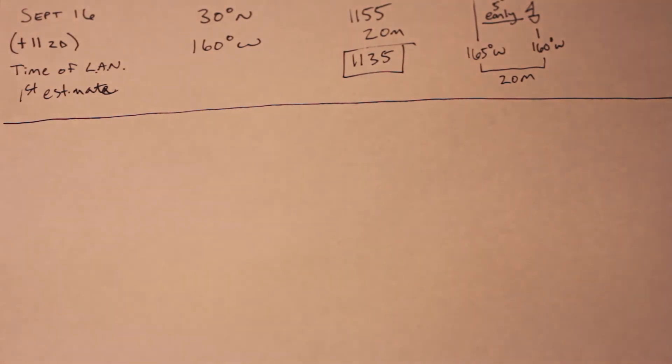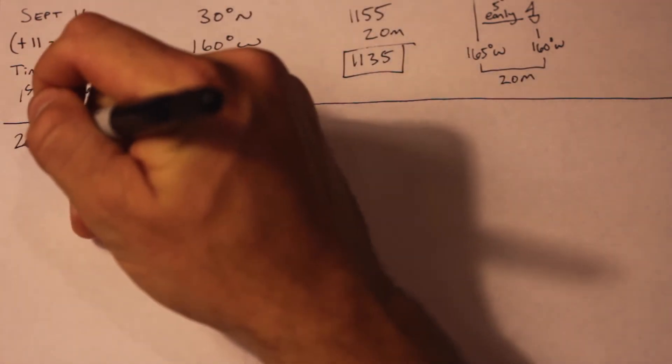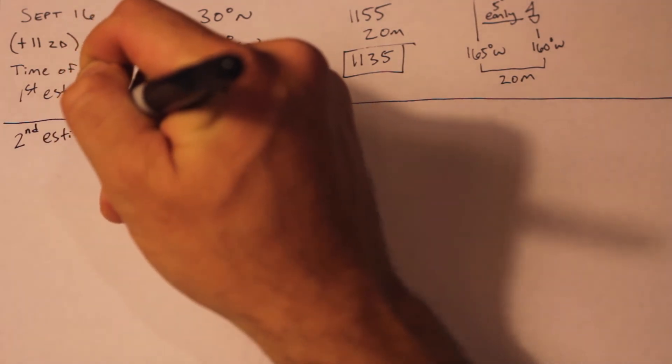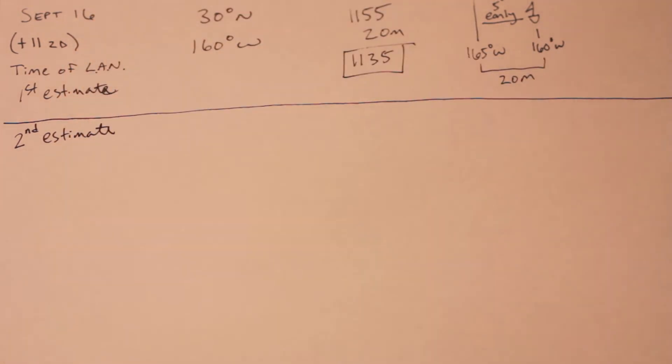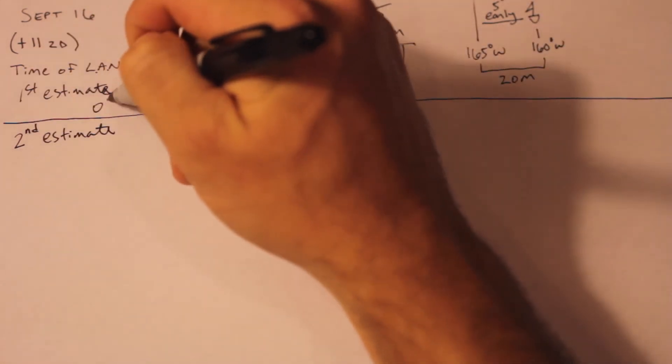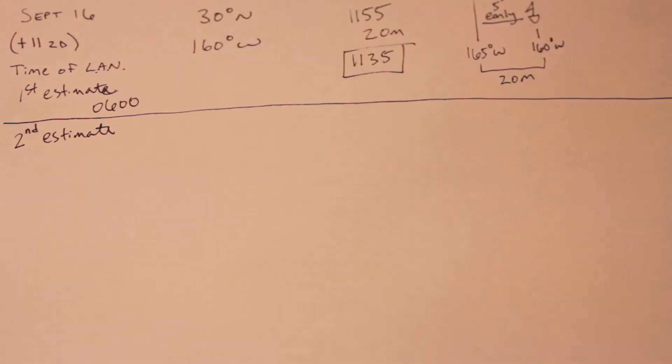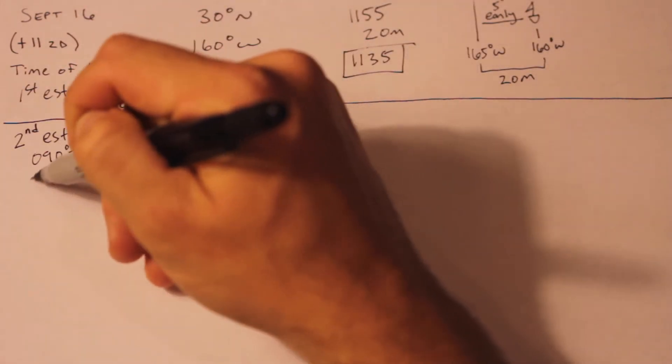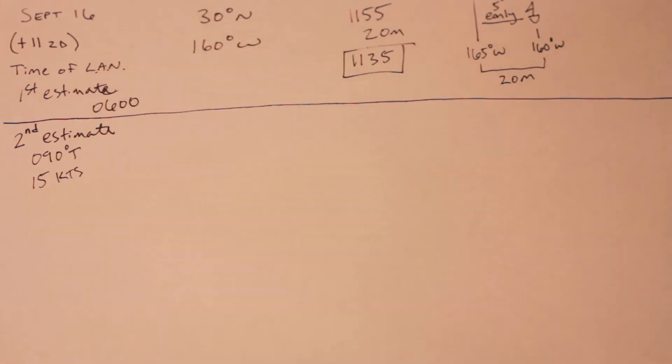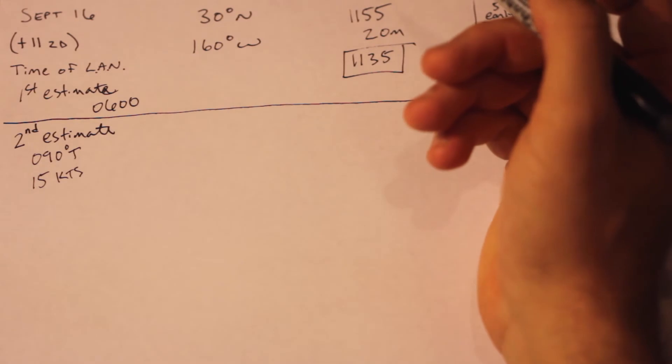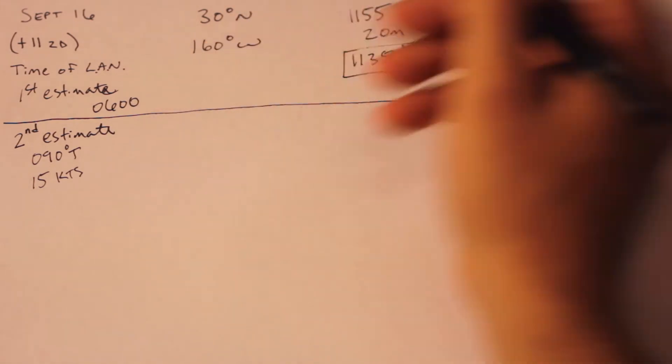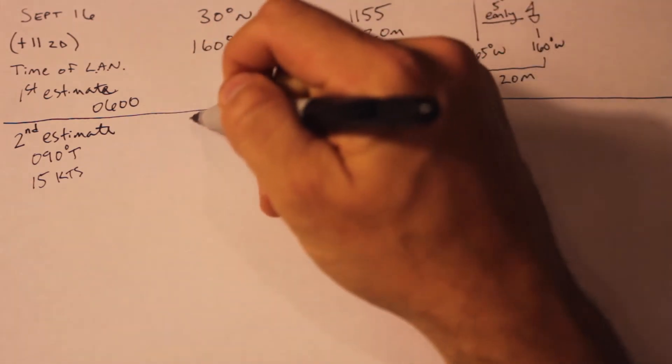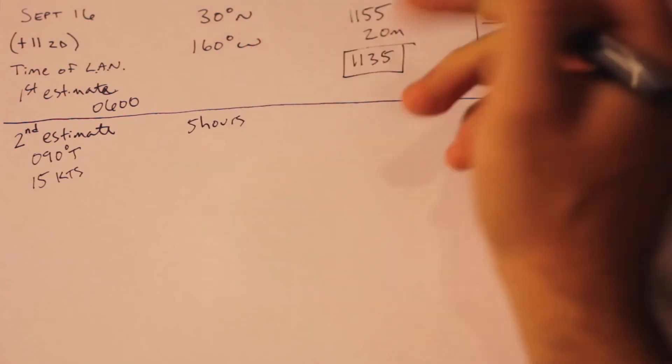Let's use our simple example of local apparent noon. This moving ship problem could apply equally to any time problem. Say we calculated the time of local apparent noon for our current position, and we did the calculation on the 4-8 watch, say at 0600 exactly. Well, when we came up with the time of LAN at 1135, that was for the position at the time of calculation, at 0600. If we're moving at all, especially quickly, or especially to the east or west, that time is going to change significantly. So the first calculation is just called a first estimate.